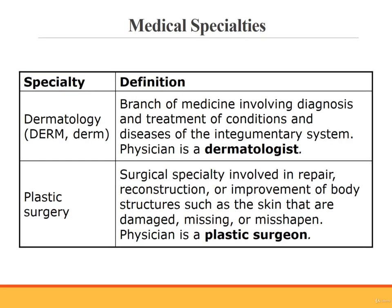There are two medical specialties related to the integumentary system. Dermatology, or derm, is the branch of medicine involving diagnosis and treatment of conditions and diseases of the integumentary system. A physician who studies dermatology is called a dermatologist. Plastic surgery is a surgical specialty involved in the repair, reconstruction, or improvement of body structures such as the skin. These structures have been damaged, missing, or misshapen. The physician for this specialty is called a plastic surgeon.